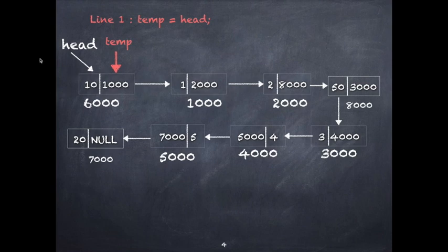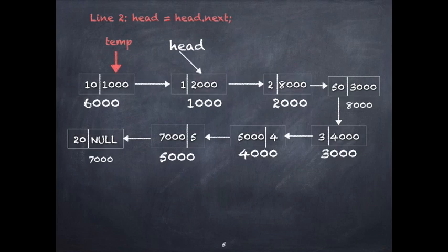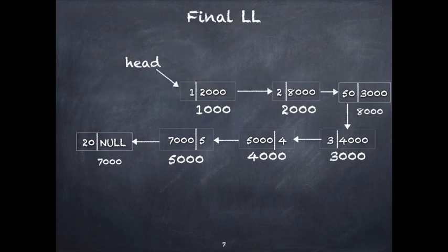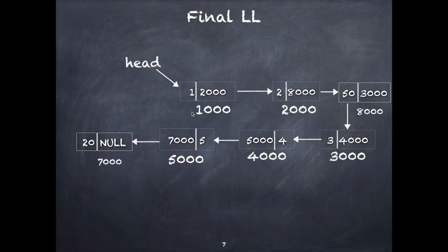Two pointers are pointing to the same node. Then head is moved to the next node — head jumps to the node at location 1000. After that, the node containing value 10 is deleted by preserving the rest of the linked list. Head is still pointing to the first node, so the final linked list after deletion has the new first node with value 1.